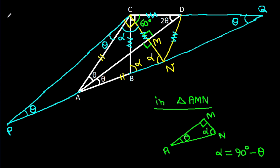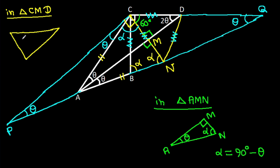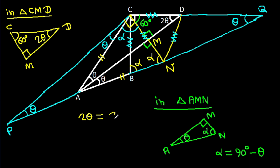Now considering triangle CMD: this angle is 60 degrees, this angle is 90 degrees, and this angle is 2 theta. So 2 theta will be 180 minus 60 minus 90, which equals 30 degrees. Therefore theta will be 15 degrees.